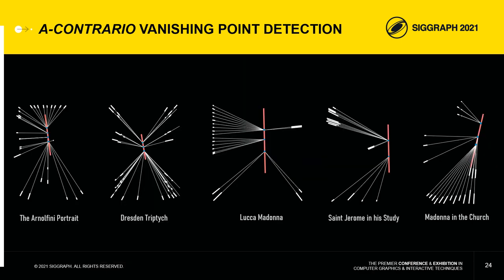In conclusion, we found in these five paintings a singular pattern, which constitutes a real secret signature of Jan van Eyck, the discovery of which may help to solve other attribution issues. But this pattern reveals much more about Van Eyck's technique.